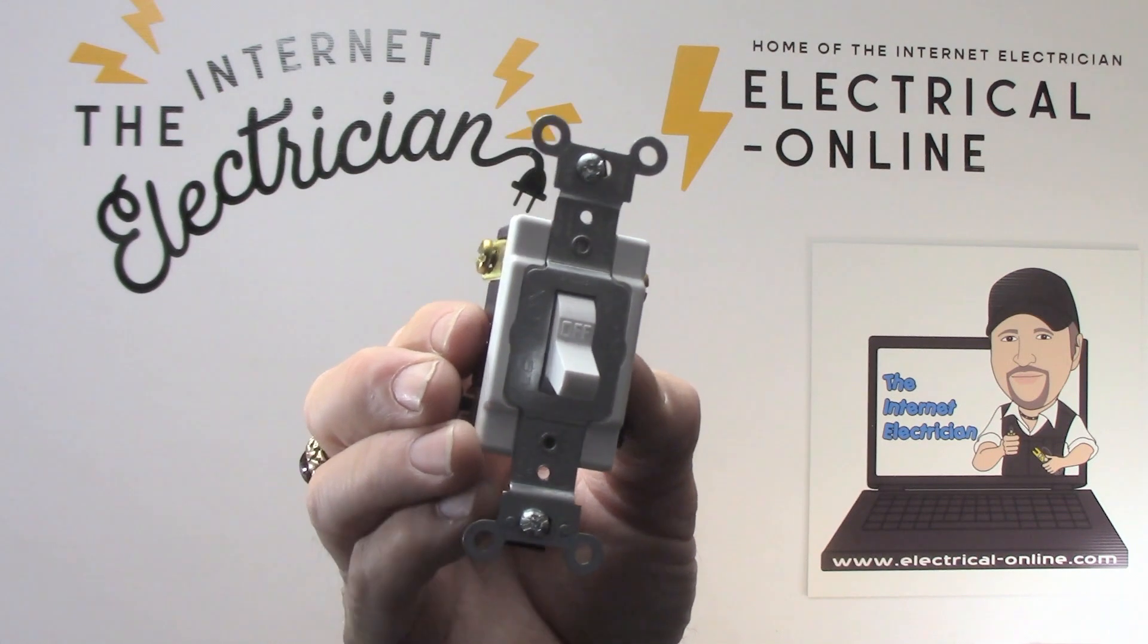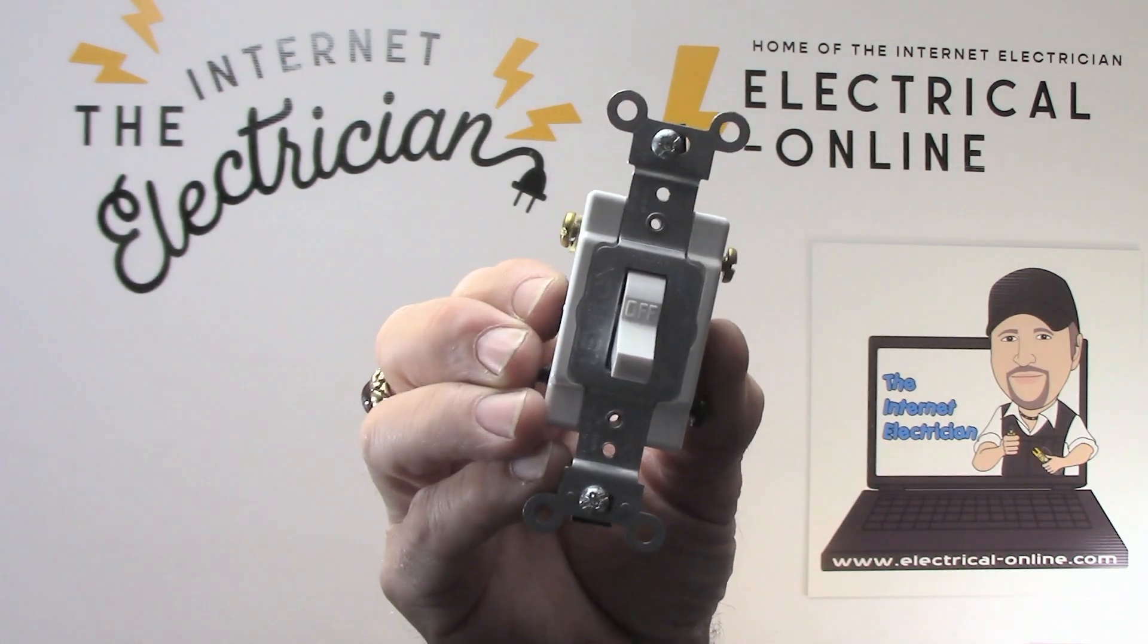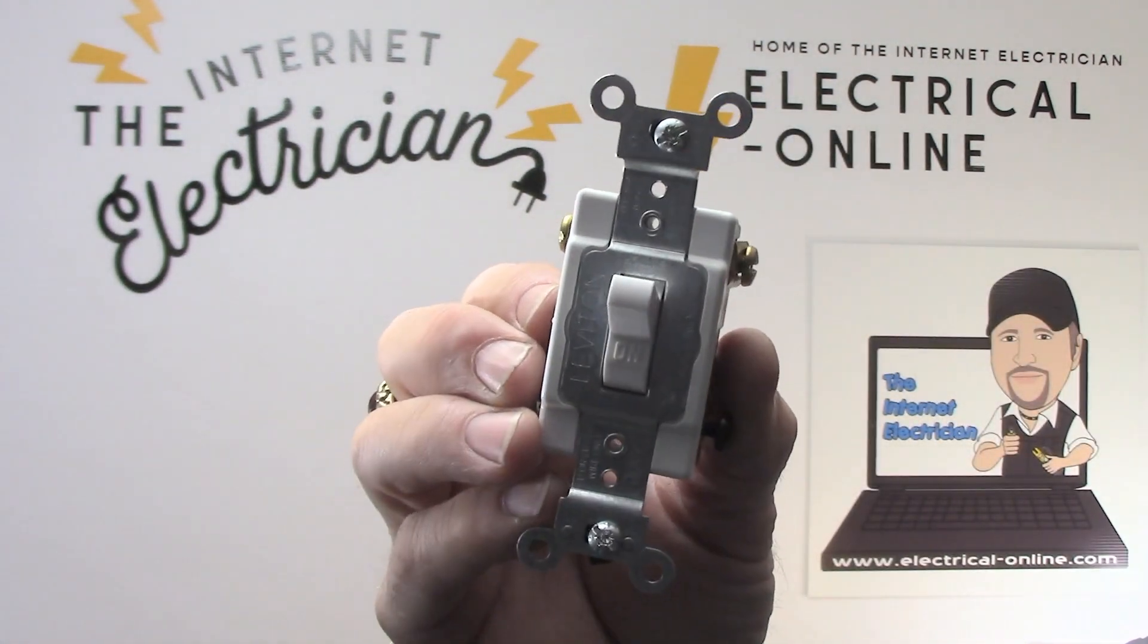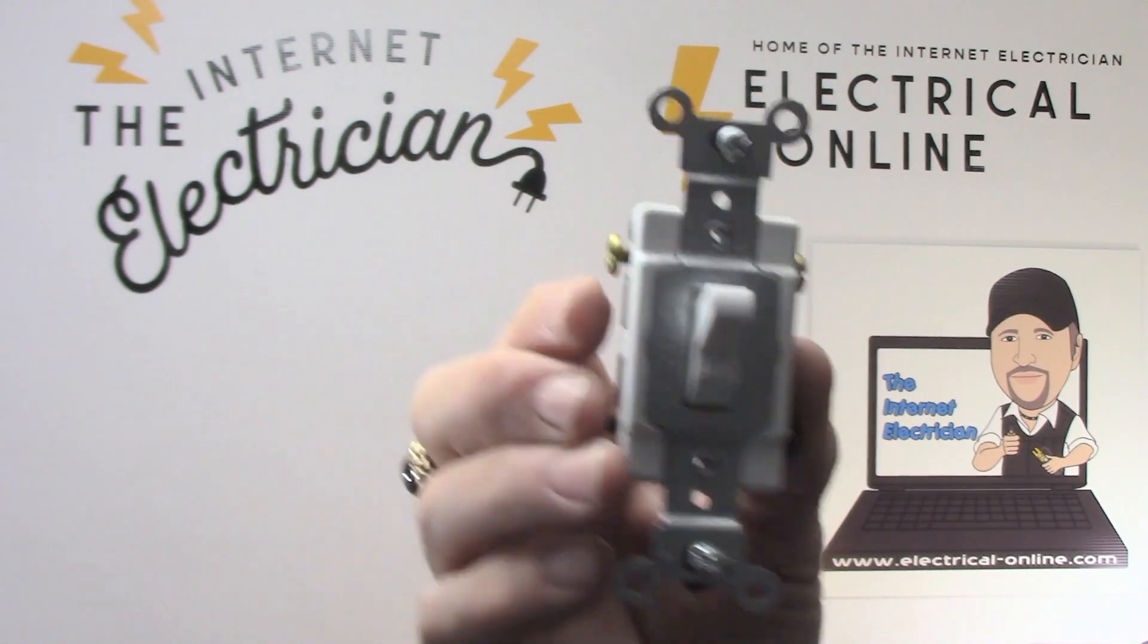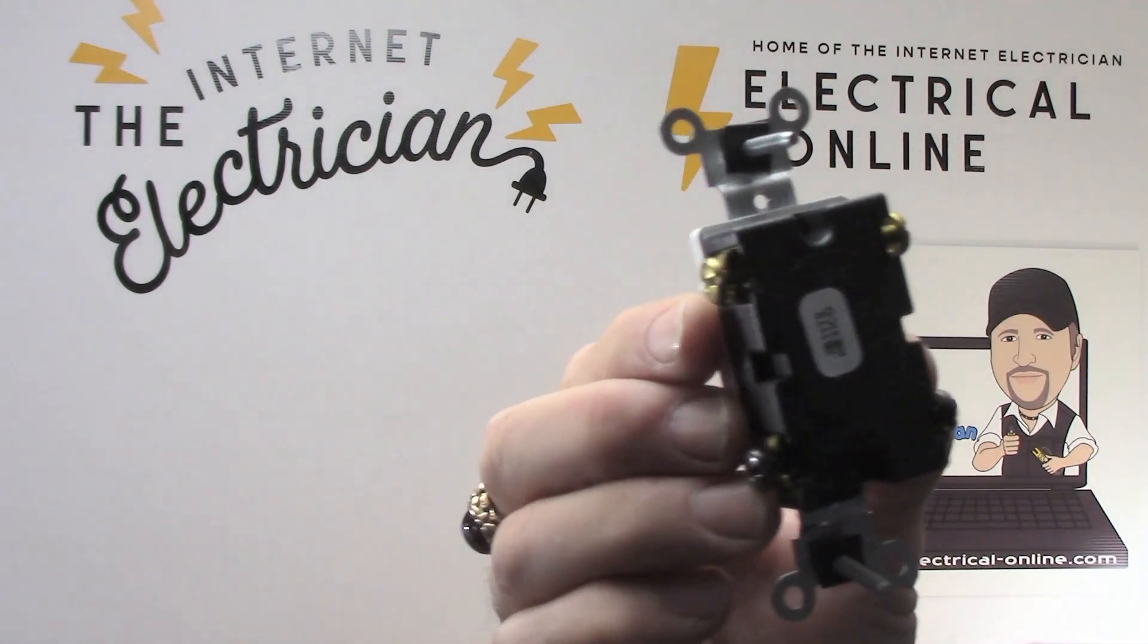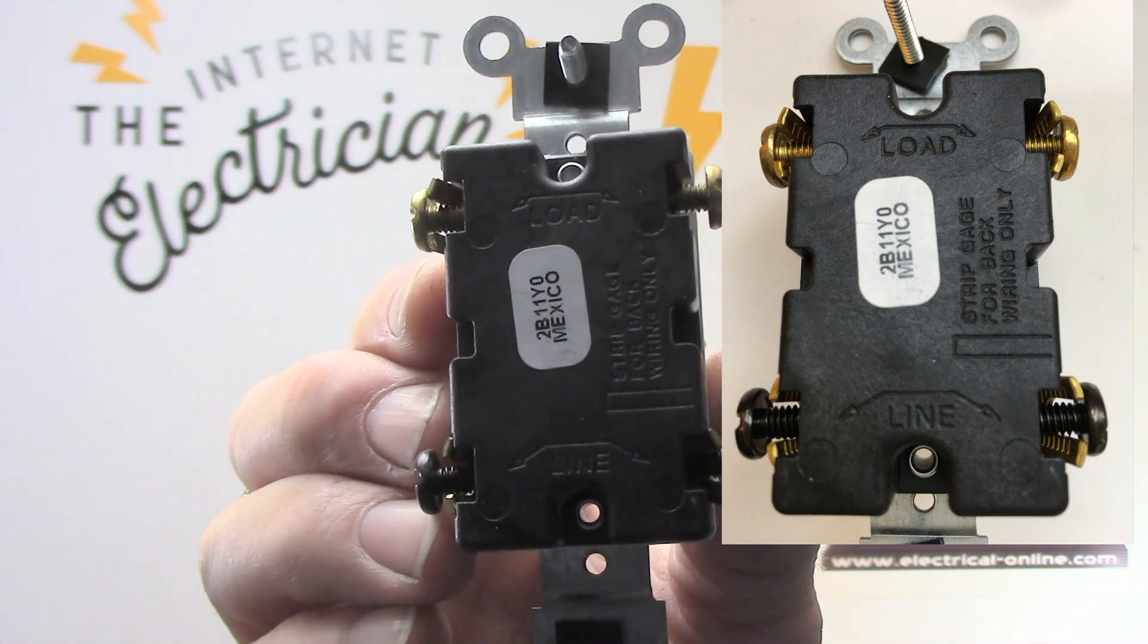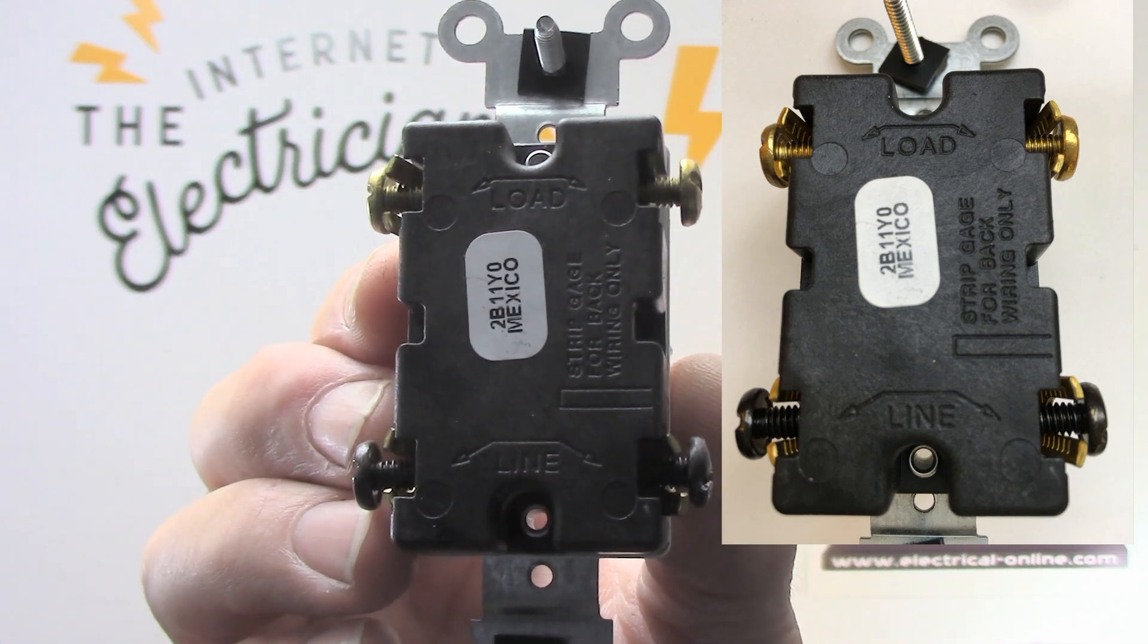Okay. So taking it out of the box. Here is the double pull switch. You see, it says on the toggle there. That's the off position. And that's the on position. Flipping it around to the back. We're going to do our best to get that focused in. And you can see. One set is called line. And the other set is called load.